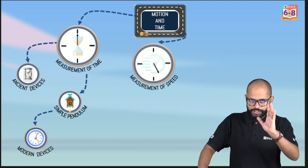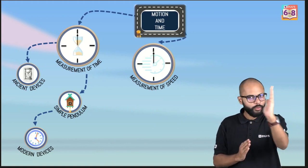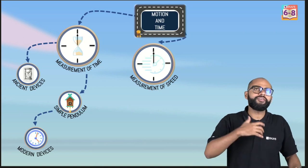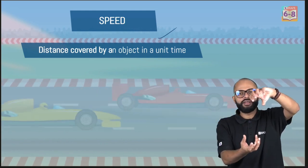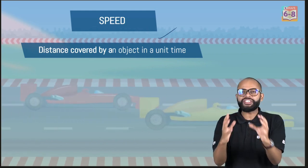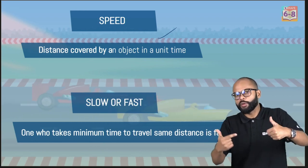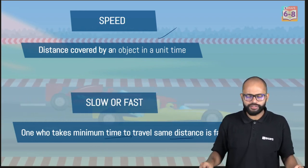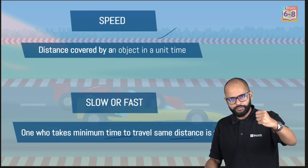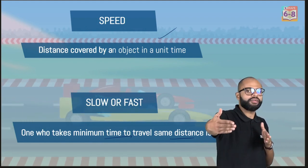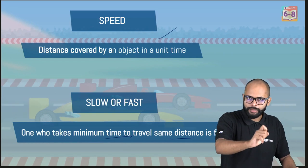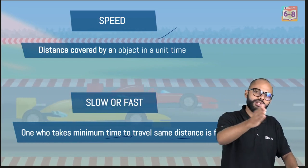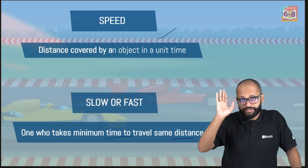Now let's talk about motion. When we talk about motion we end up talking about how fast or slow something is — that is speed. Speed is the distance covered by an object per unit time. The physical significance of speed is that it tells you how fast or slow a body is. In a 100-meter race, whoever takes the least time wins — their speed is more.